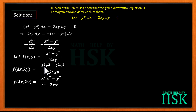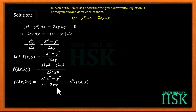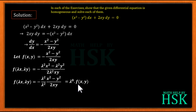We can take λ² common in both numerator and denominator, so this expression becomes λ⁰ times f(x, y), because minus (x² minus y²) upon 2xy equals f(x, y). Since f(λx, λy) equals λ⁰ times f(x, y), this f(x, y) is a homogeneous function of degree 0. Therefore, since dy/dx equals a homogeneous function of degree 0, the equation is a homogeneous differential equation.